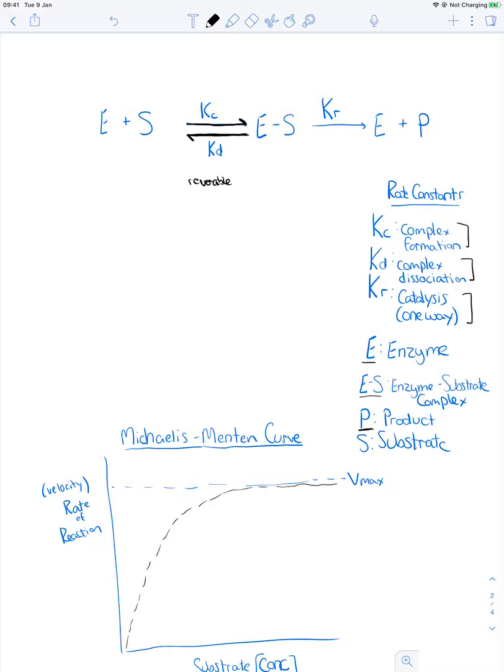So there's a constant about how we go from ES, from the enzyme substrate to the enzyme-substrate complex. That's called K sub C. Now KD is going back the other way. So for whatever reason it goes back the other way.